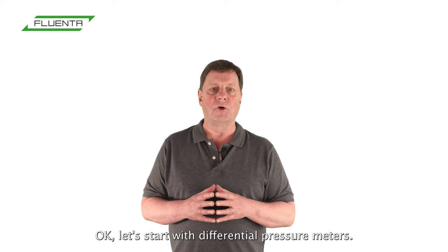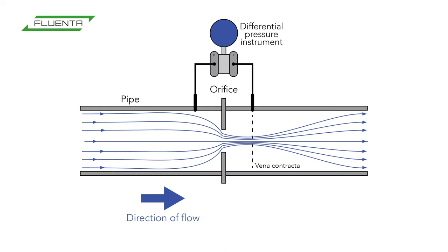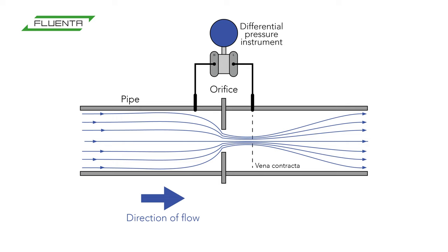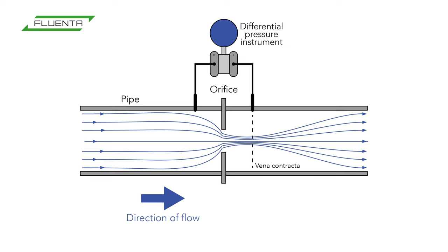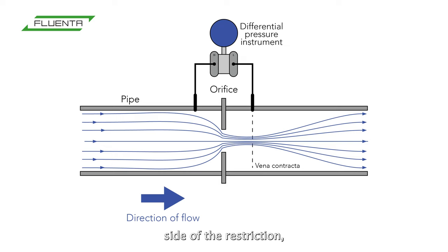Let's start with differential pressure meters. In a nutshell, here's how they work. The measurement relies on Bernoulli's principle. A restriction, such as an orifice, is located in the gas flow. Pressure sensors measure the pressure on either side of the restriction, which allows the gas flow to be calculated.